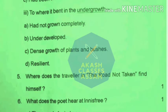Then some short questions are given. In question number 5, it is asked where does the traveller in 'The Road Not Taken' find himself, and what does the poet hear at Innisfree?